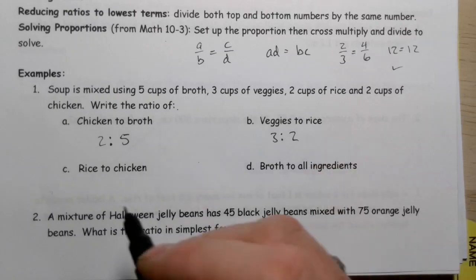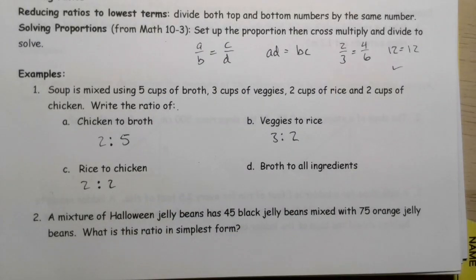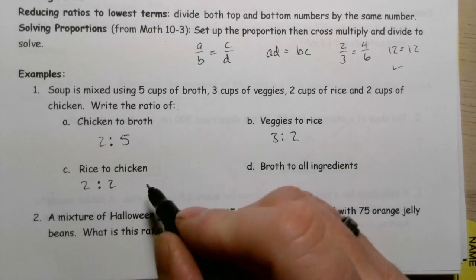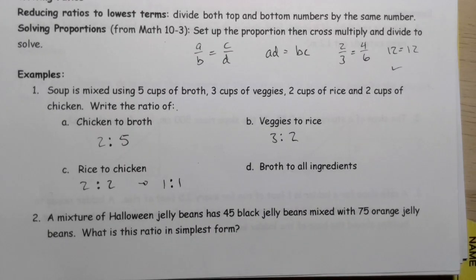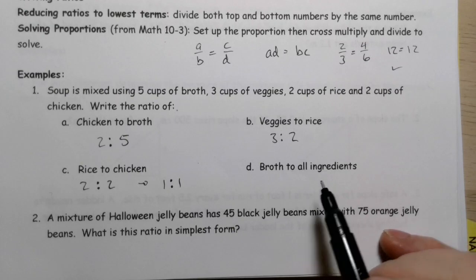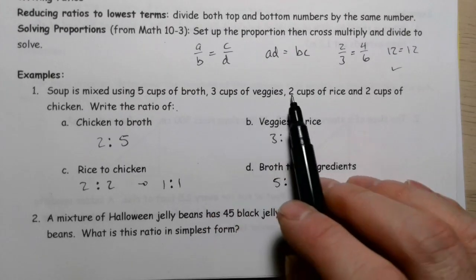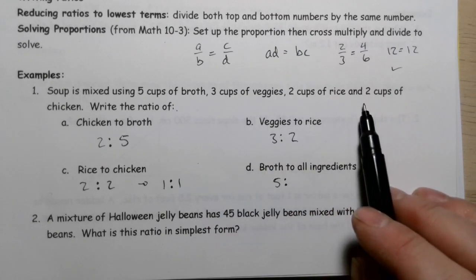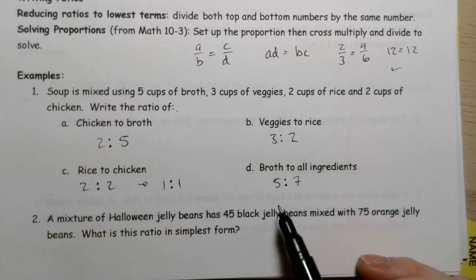Rice to chicken. So rice, 2 cups of rice to 2 cups of chicken. Now, in this case, we do have 2 prime numbers - it's 2 and 2. Notice because it's the same number here, what I can do is divide both sides by 2, and I get 1 to 1. So that really does give me a good idea of how much rice and chicken I'm going to put in - I am going to put in equal amounts of rice and chicken. Now, broth to all the ingredients. 5 cups of broth to all the ingredients. We've got 3 cups of veggies plus 2 cups of rice, that's 5, plus 2 cups of chicken, that's 7. So to all the other ingredients, 5 to 7.